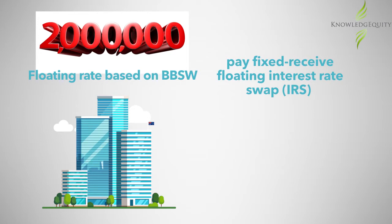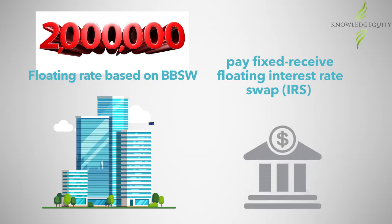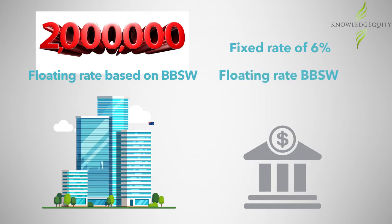The IRS is entered into with a counterparty, usually a financial institution, providing a fixed rate of six percent and a floating rate BBSW on a principal amount of two million dollars, with annual settlements for a period of three years.